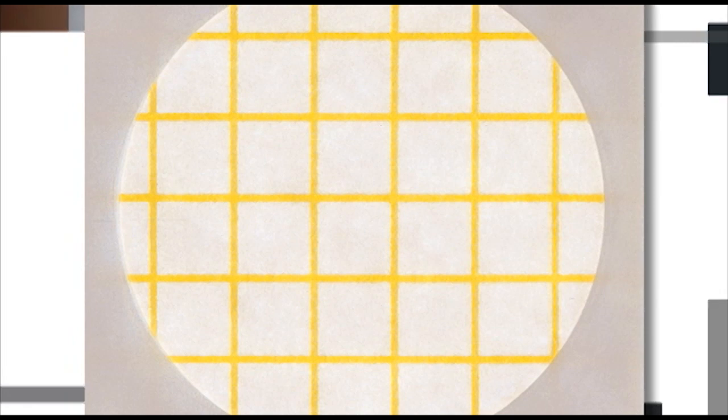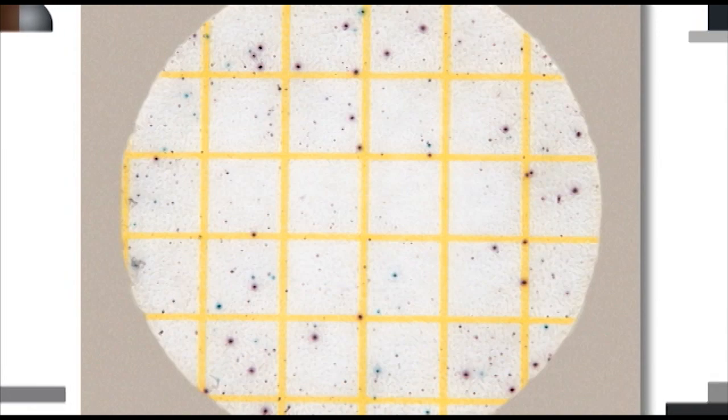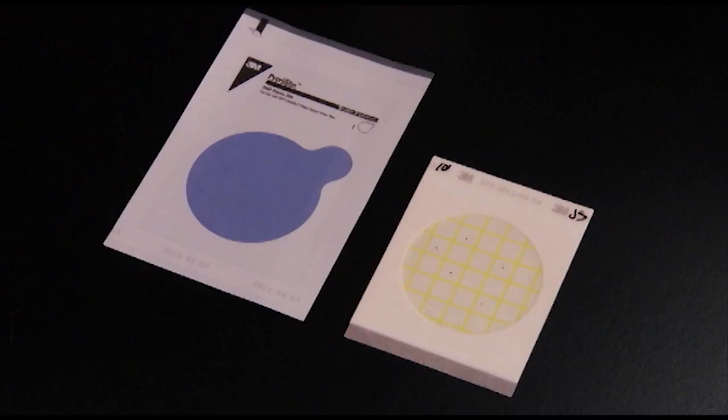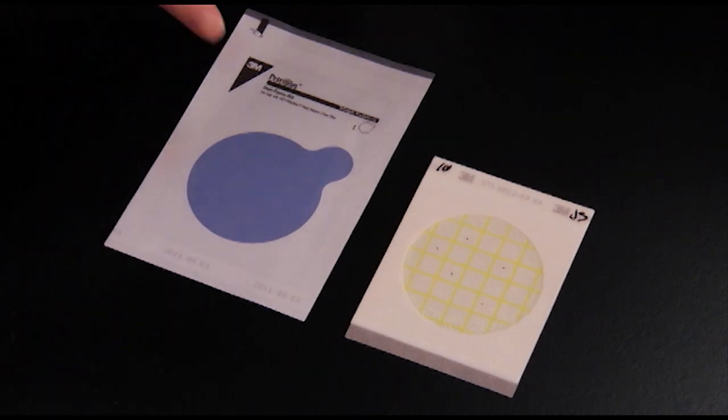If no colonies are present after 24-hour incubation, the test is complete and the disc is not needed. If colony colors other than red-violet are present, use a 3M PetriFilm Staff Express Disc to differentiate Staph aureus from the suspect colonies.